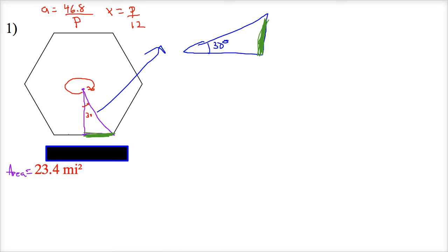I'm trying to get my pen to pick up today. So I defined my value of this term as P divided by 12. And my apothem value is 46.8 divided by P. So where do I go from here?